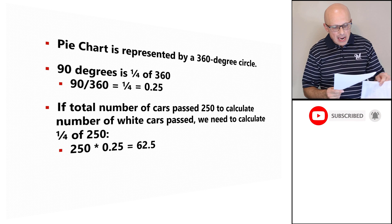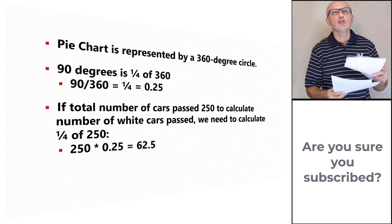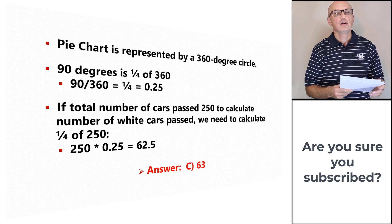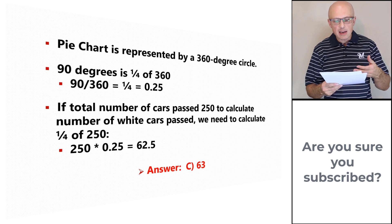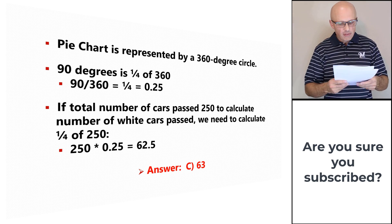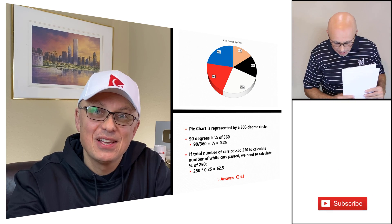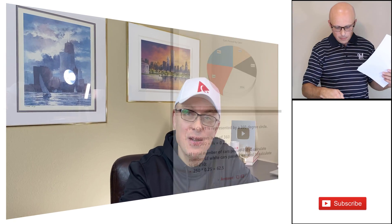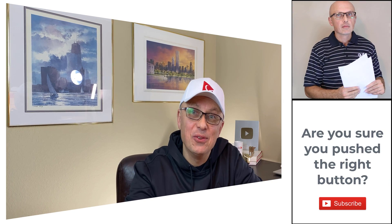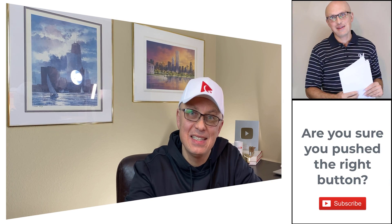The closest value among the answer choices is 63, so the correct choice is choice C: 63. Hopefully you've nailed this question and now know how to answer similar problems on the test.